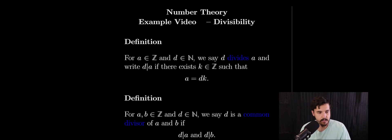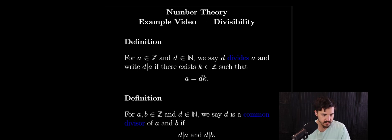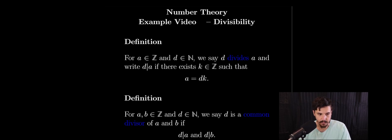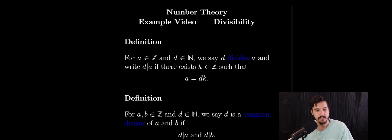Now to get started, I'm going to go over a few simple number theory definitions that are going to go along with this video and the topic of divisibility. To start with, I'm going to give a simple definition for what we mean when we say that something divides another number in the mathematics world. So if we have some integer a and the natural number d, we will say that d divides a if there exists an integer k such that a equals d times k.